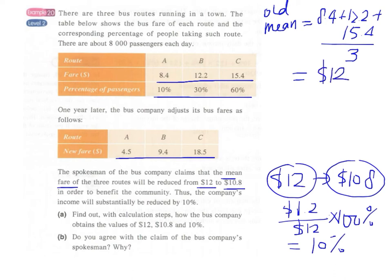The new mean can be found in this way: 4.5 plus 9.4 plus 18.5, divided by 3, which equals $10.80.